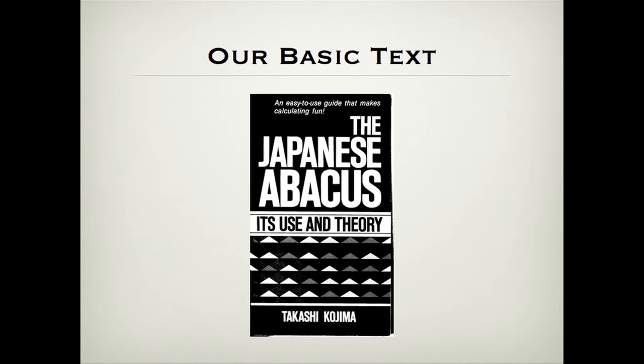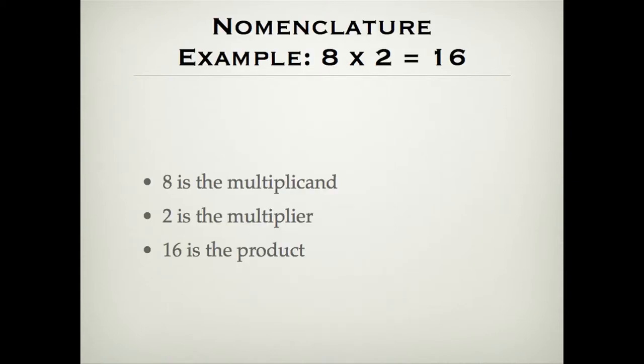We're going to use a standard nomenclature for multiplication problems. For example, in eight times two equals sixteen, eight is called the multiplicand, two is the multiplier, and sixteen is the product.